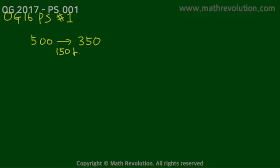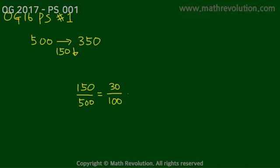The question asks by what percent is the price to be reduced. We can get the percentage by dividing 150 by 500. Dividing numerator and denominator by 5, we get 30 over 100, which is 0.3, so 0.3 equals 30 percent. The correct answer choice is E.